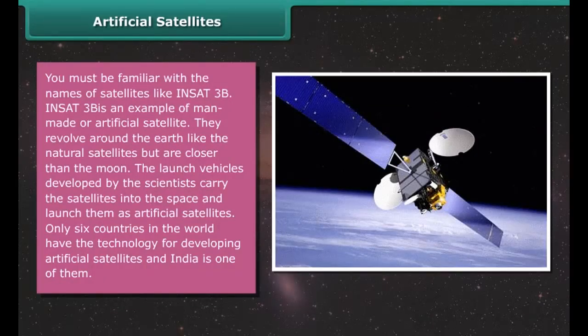The change in seasons on the Earth takes place due to the tilting of its axis of rotation. As a result, the northern and southern hemispheres tilt towards the Sun at different times throughout the year. When the northern hemisphere is tilted towards the Sun, we experience summer, while it is winter season in the southern hemisphere.